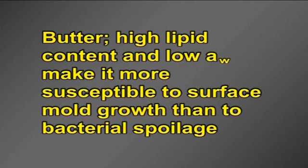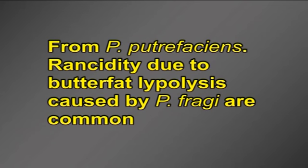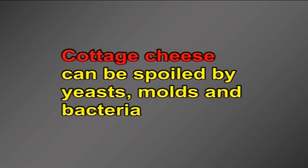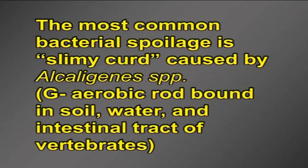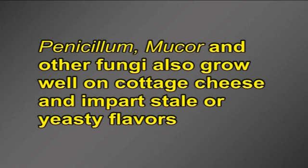Butter: its high lipid content and low water activity make it more susceptible to surface mold growth than to bacterial spoilage. Some pseudomonads can be a problem. Surface taint — a putrid smell — is caused by production of organic acids, especially isovaleric acid, from Pseudomonas putrefaciens. Rancidity due to butterfat lipolysis caused by Pseudomonas fragi is common. Cottage cheese can be spoiled by yeast, molds and bacteria. The most common bacterial spoilage is slimy curd caused by Alcaligenes species, a gram-negative aerobic rod found in soil, water and the intestinal tract of vertebrates. Penicillium, Mucor and other fungi also grow well on cottage cheese and impart stale or yeasty flavors.